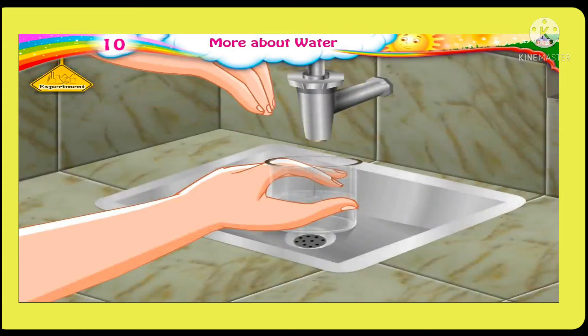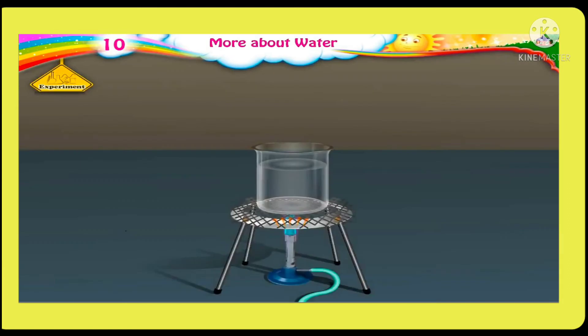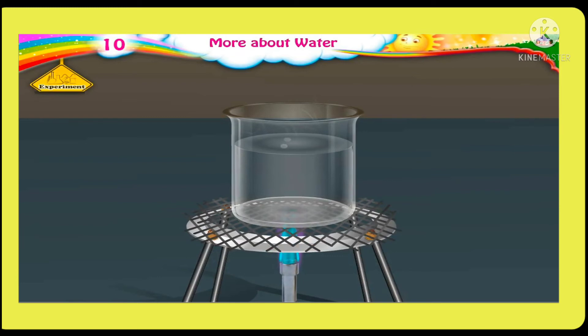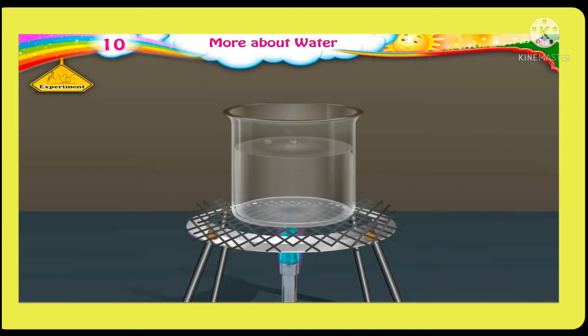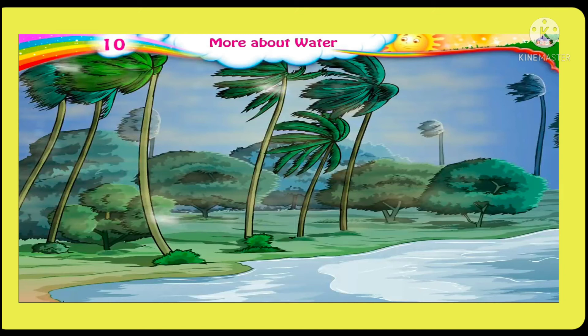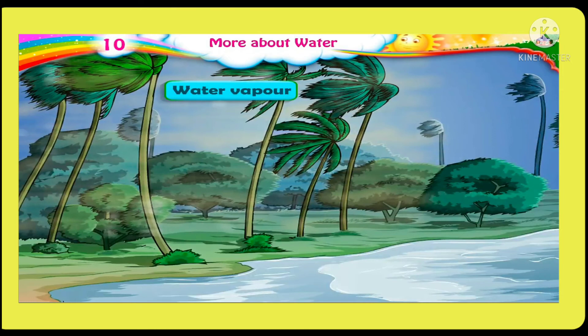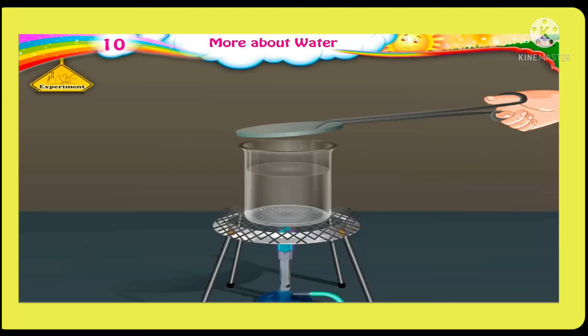Now we will see one more experiment. Take water in a beaker and heat it on a burner. What do we see? After some time, water starts boiling and a little later the water level in the beaker decreases. Why does this happen? When we heat the water in the beaker, it turns into vapour and the water level goes down. The form in which water is held in the air is called water vapour.